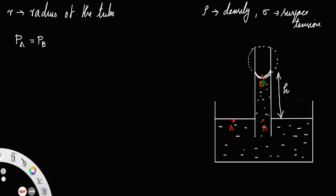The pressure at a is the atmospheric pressure because above point a it is atmosphere. So we can write pressure at a equals atmospheric pressure P. Let us call that equation number one.